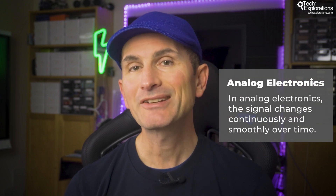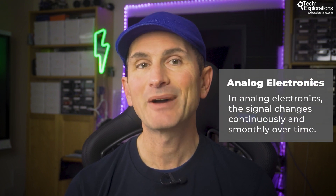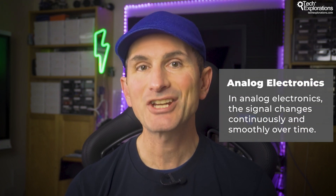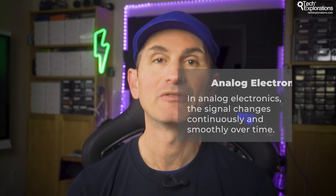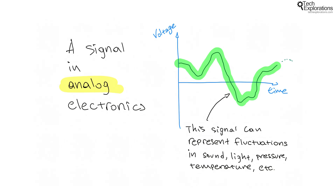Analog electronics are characterized by signals that change continuously and smoothly over time. These changes can represent fluctuations in sound, light, temperature, or pressure, and they mirror the natural variability found in the real world.